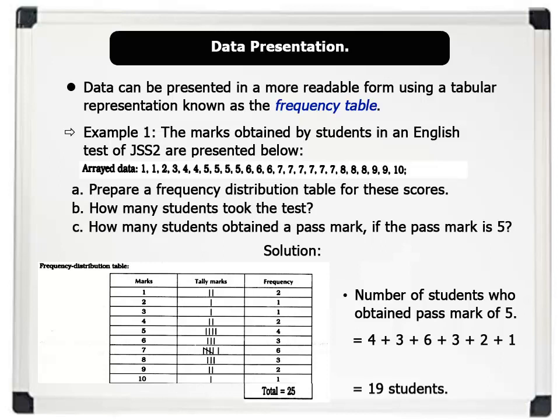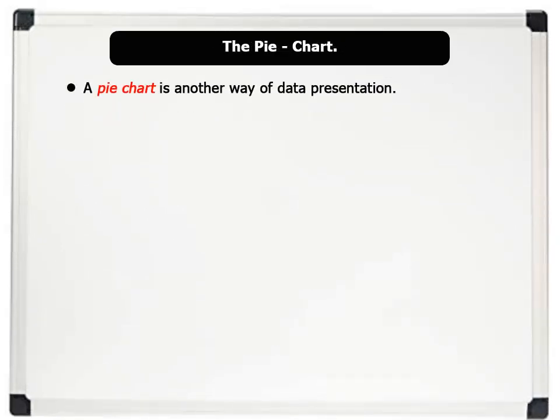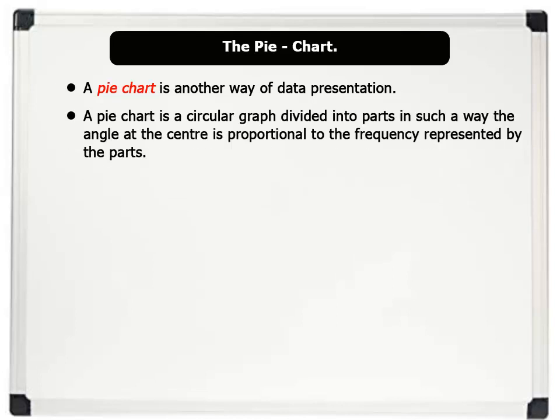That's brilliant. Let us now see another way of presenting data known as the pie chart. A pie chart is another way of data presentation. A pie chart is a circular graph divided into parts in such a way the angle at the center is proportional to the frequency represented by the parts.